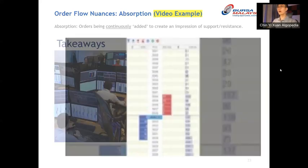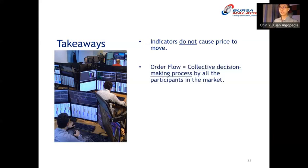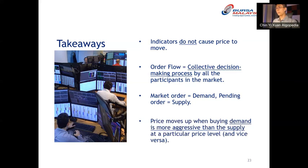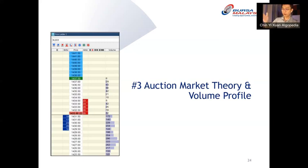A quick takeaway from our session so far: Number one, indicators do not cause price to move. Number two, order flow is the collective decision-making process by all market participants. Number three, market order equals demand; pending order equals supply. Number four, price moves up when buying demand is more aggressive than supply at a particular price level, and vice versa. Now I want to introduce a very important concept: auction market theory and volume profile.